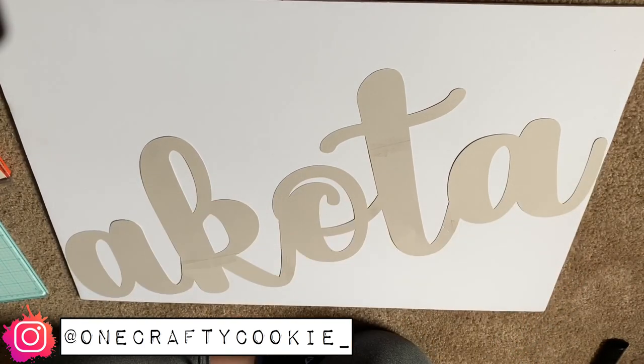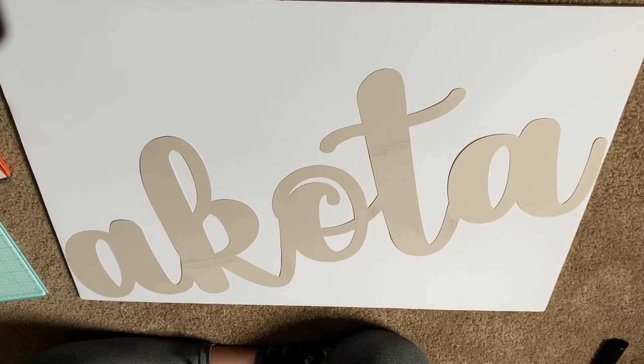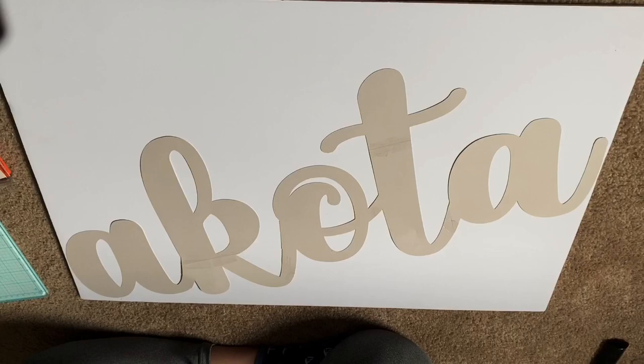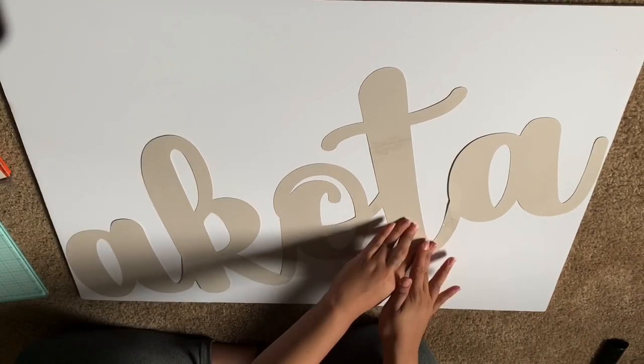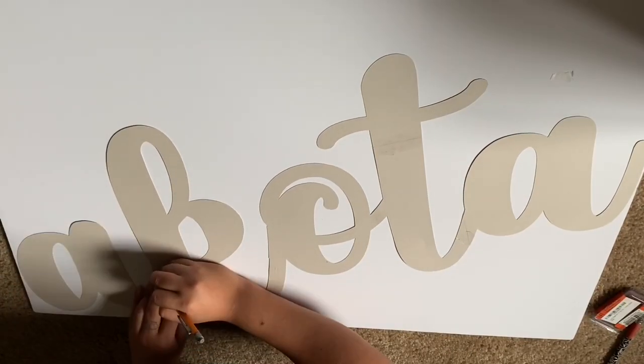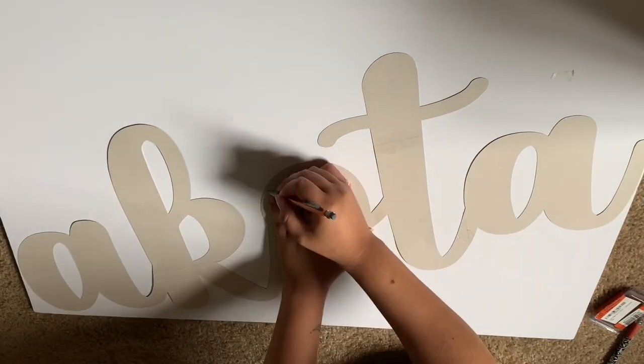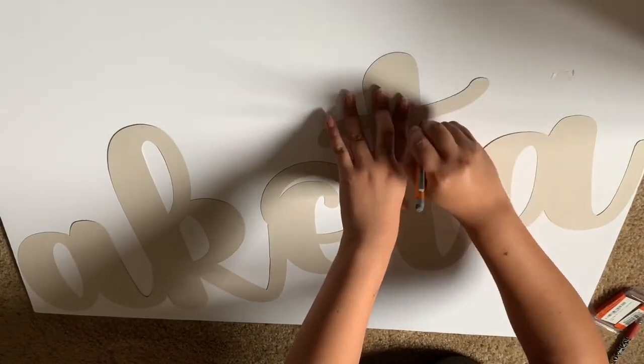So what I do first is I take my stencil, which I cut out with my Cricut, but I'm sure you can also cut it out with your printer and then cut it out manually. So I take my stencil and I tape it down to the board to secure it. Then with my pencil, I trace all around it.